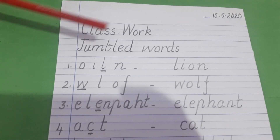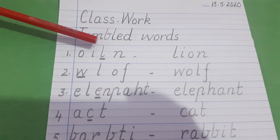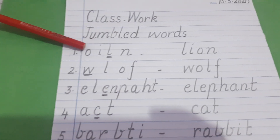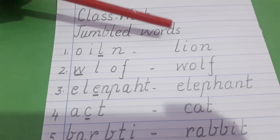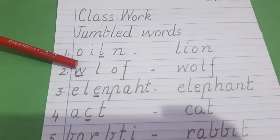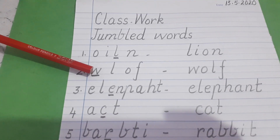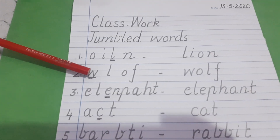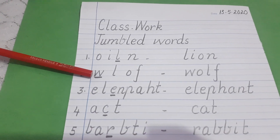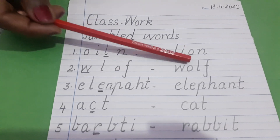Jumble words. L-I-O-N. Lion. Wolf. W is underlined, so the spelling of wolf will start from W-O-L-F. Wolf.